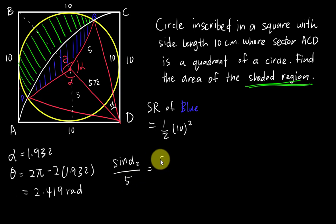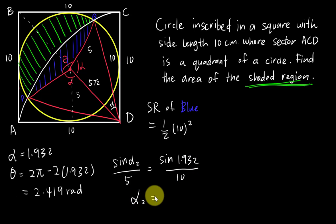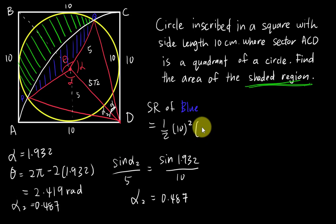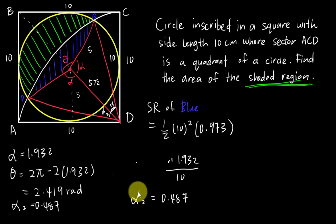Using sine rule: sin(α₂)/5 = sin(1.932)/10. Make sure your calculator is in radian mode. Calculating: sin(1.932)/10 × 5, then applying inverse sine gives α₂ = 0.487 radians. Since the full sector has double this angle, θ₂ = 2 × 0.487 = 0.973 radians.